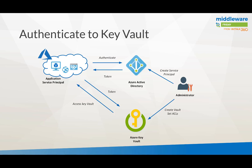The way Key Vault works is that the administrator creates a service principal in Azure Active Directory and sets access control policies within the vault. From an application perspective, you use that service principal to authenticate against Azure, get a token back, and with this token you can access your Key Vault. So the steps are: provision the Key Vault, create service principals, set access control permissions for keys and secrets, then authenticate to get a token and access the vault.